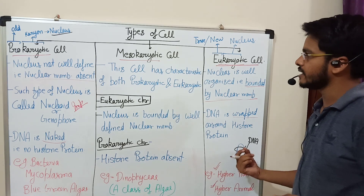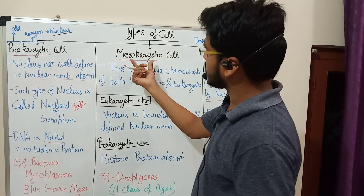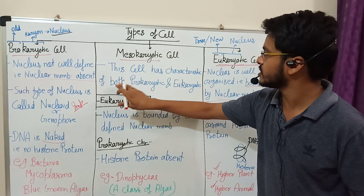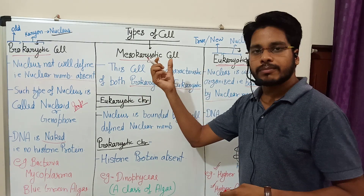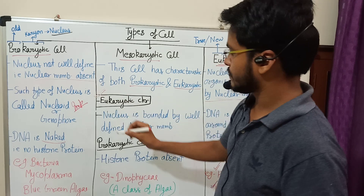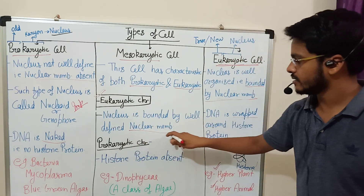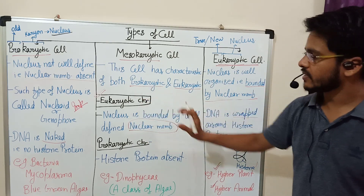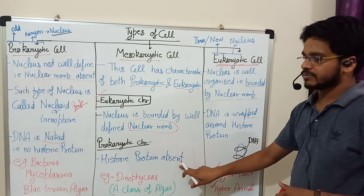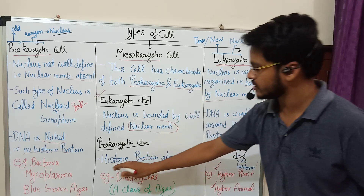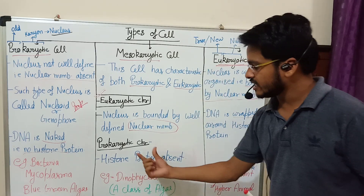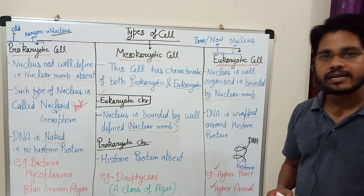The second type is mesokaryotic cells. This type of cell has characteristics of both prokaryotic and eukaryotic cells. Like eukaryotic cells, the nucleus is bounded by a well-defined nuclear membrane. But like prokaryotic cells, histone protein is absent — no histone protein. An example of mesokaryotic cells is Dinophyceae, which is a class of algae.